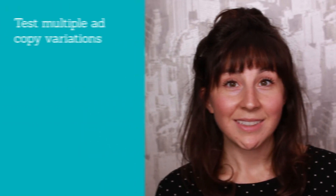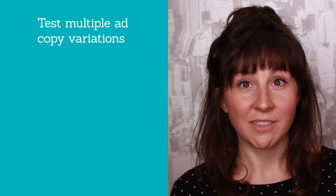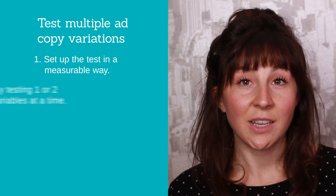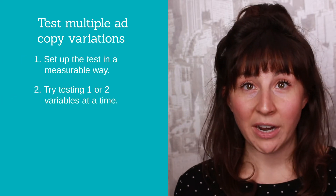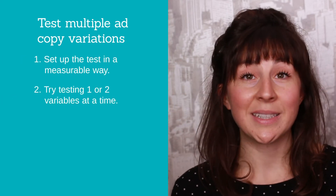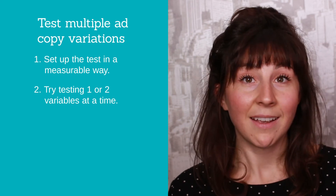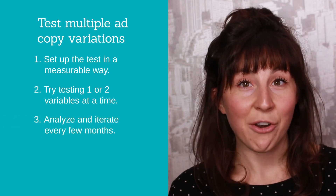Next, test multiple ad copy variations. Set up your test in a measurable way. Try testing one or two variables so you know exactly what's working and exactly what's not. Then analyze and iterate every few months. Pro tip: always test variations equally — test two options against two options, never just test one very different variation.